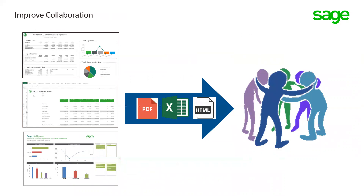Another big feature is improving collaboration within your business using the distribution feature. Sage Intelligence allows you to send any report as a PDF, an Excel report, or an HTML report. You can send to a file, send by email to a group, or auto-distribute. For example, if you carry inventory, you can send reports to your warehouse manager — maybe individual sheets to individual warehouse managers across the country or globe. You can send sales reports to sales managers or sales reps, and purchasing reports to your purchasing team, giving people within your company the ability to make decisions within their jobs.